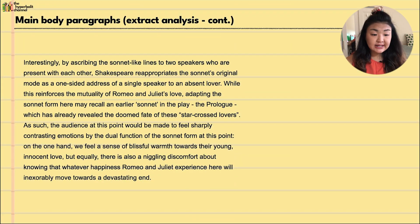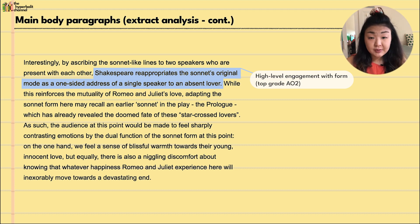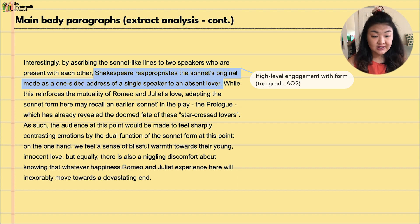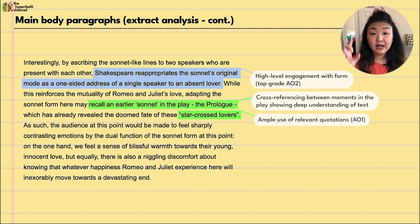Interestingly, by ascribing the sonnet-like lines to two speakers present with each other in the scene, Shakespeare reappropriates the sonnet's original mode as a one-sided address of a single speaker to an absent lover. Those who have read Shakespearean sonnets will know the speaker always addresses an absent lover, but here both lovers are present while using the sonnet form. Adapting the sonnet form here may also recall the prologue that opens the play, which has already revealed the doomed fate of the star-crossed lovers.